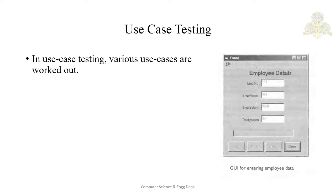Welcome back to the software testing course. In the last class we covered types of testing: smoke testing, black box, white box, and interface testing. Today we will get started with use case testing. In use case testing, various use cases are worked out — the exact sequence of operations done by the user is worked out and testing is done in the same sequence to check whether the desired outputs are obtained.